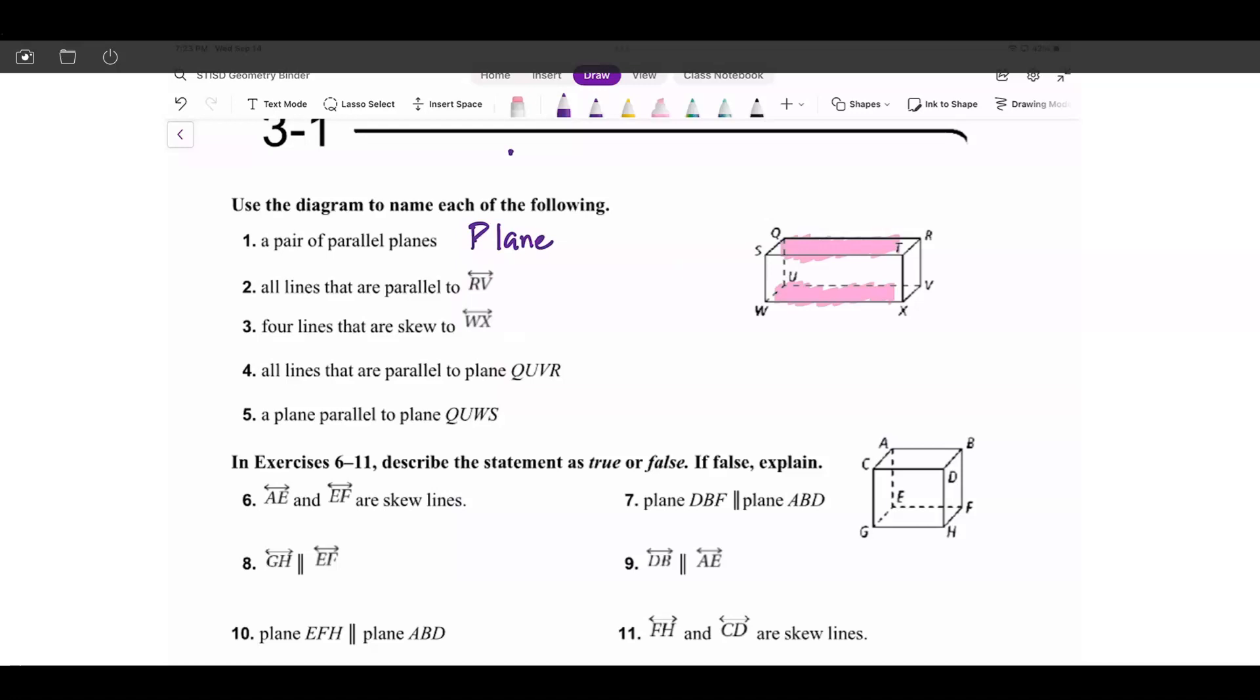You write plane, and then you have SQR. It's parallel to plane UVXW, right? Now you could have also picked the ones on the side if you wanted to, but I'm just going to select those two planes.